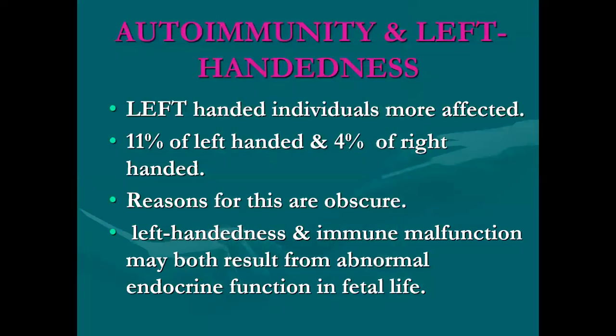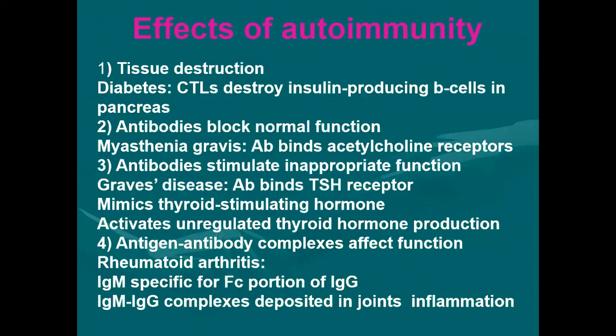In left-handed people, they are more commonly affected by autoimmune diseases — 11% of the left-handed versus 84% of right-handed people. The reason for this is not entirely clear, but it is somehow related to abnormal endocrine activity during fetal life.